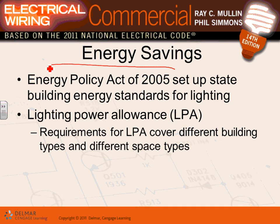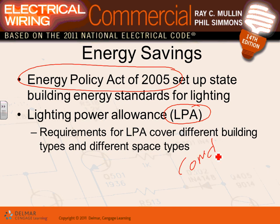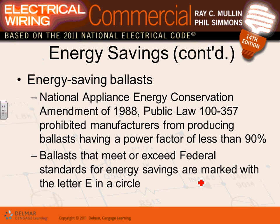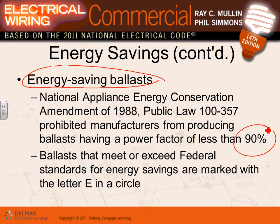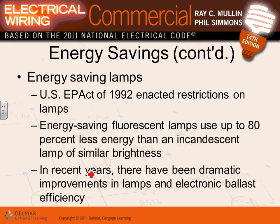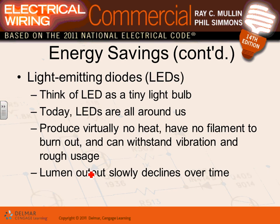The Energy Policy Act of 2005 means all your lighting equipment has to meet building energy standards for lighting — building power allowances. That's what comcheck is for: to meet the energy code. You can't install a lighting fixture that doesn't meet energy code. Ballasts must also be energy-saving and achieve 90% power factor. If they meet or exceed federal standards, they receive an 'E' designation. All these changes — up to 80% improvement in electric efficiency — are because of energy-saving requirements.